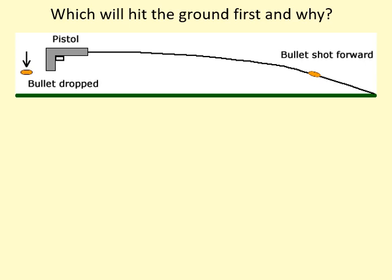In this question, a bullet is being fired horizontally from a gun, and at the same time another bullet is dropped from the exact same height. For example, this one is being fired at 300 meters per second sideways and this one is just being dropped from rest. It's tempting to say the bullet fired horizontally will hit the ground later because it's traveling a bigger distance, but the truth is that going sideways doesn't actually affect its vertical motion.